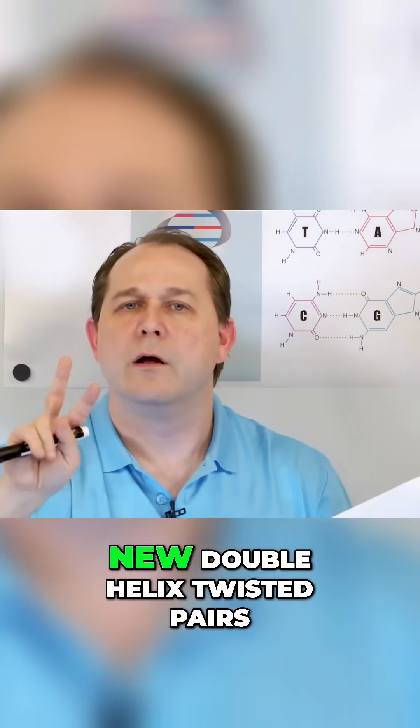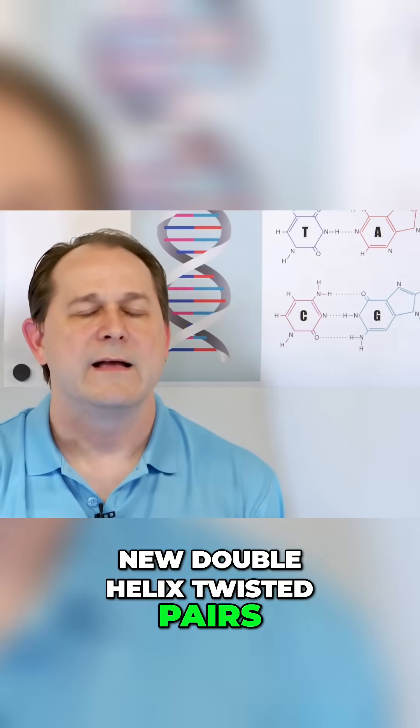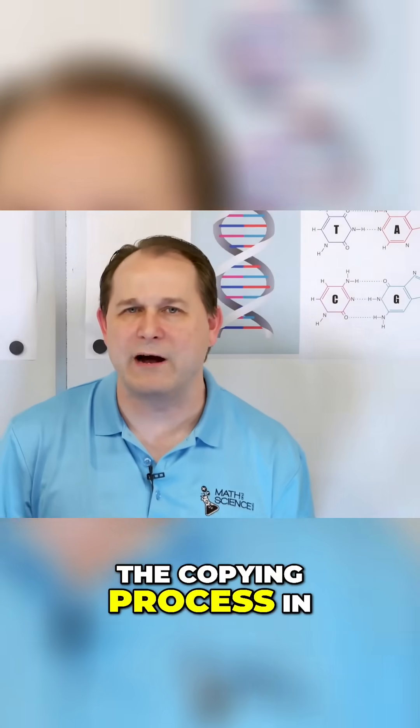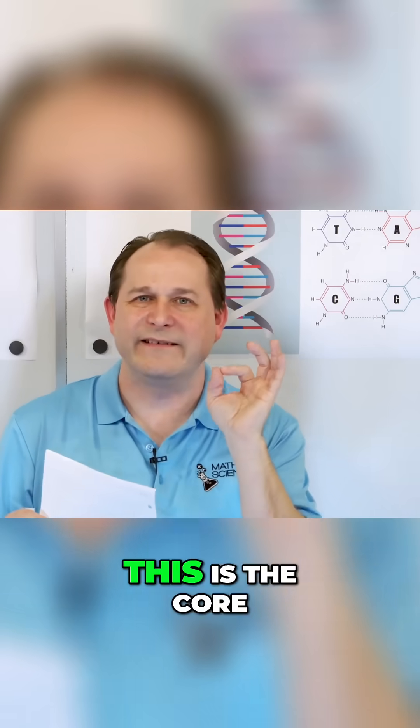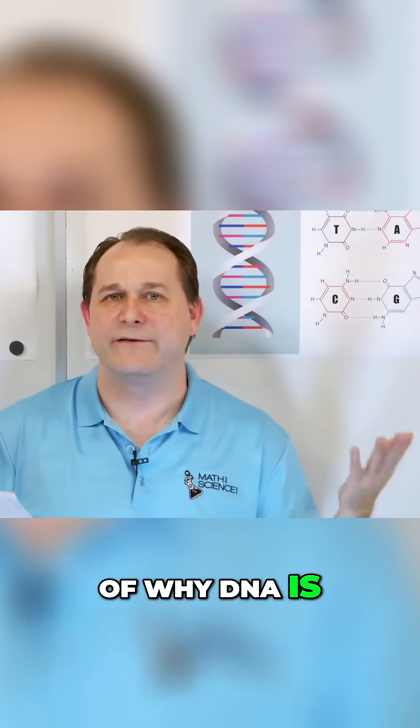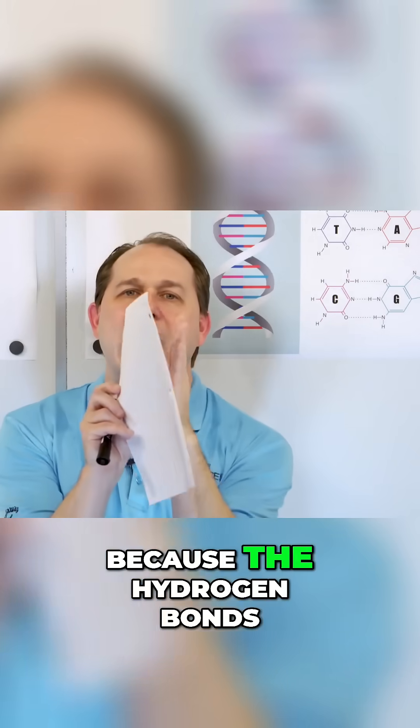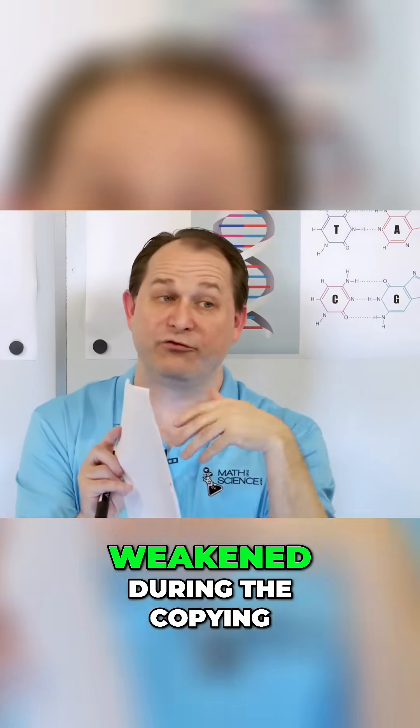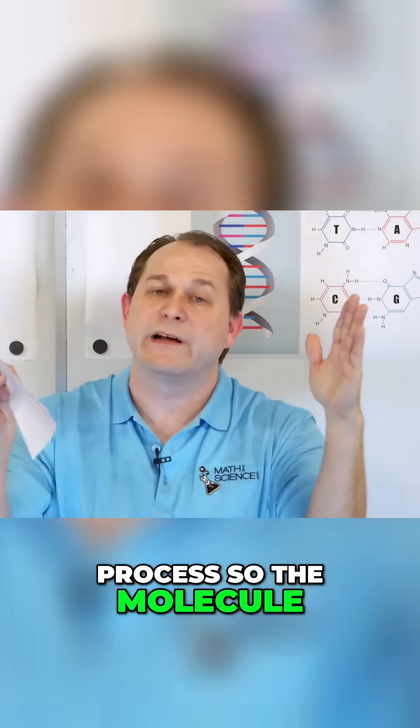I'm going to say that one more time because even though I'm not going to explain the copying process in detail here, this is the core of why DNA is the way it is. Because the hydrogen bonds in the middle are just strong enough to hold it together, but they can be weakened during the copying process so the molecule can split apart.